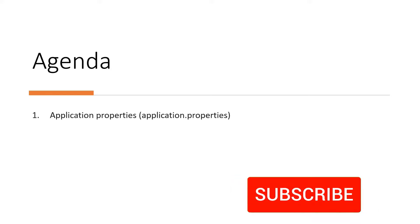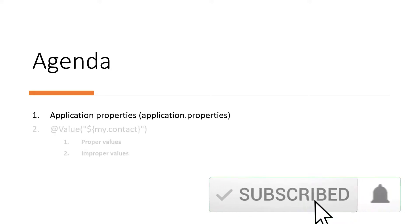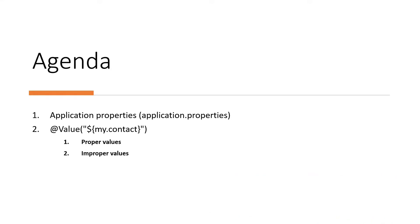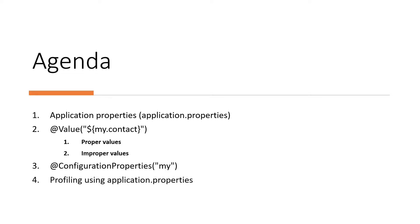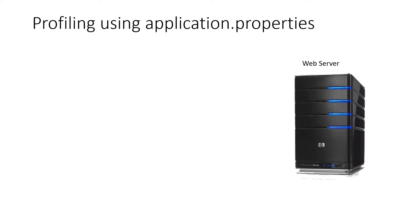We have seen application properties, how to access it and inject values from application properties to variables, and how to inject values into the bean itself. Now we are left with two things: one is profiling and another is dynamic profiling. Let us see what profiling is and what are all the uses of profiling.